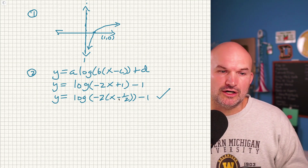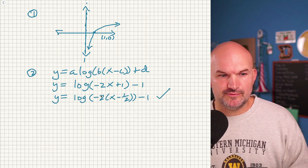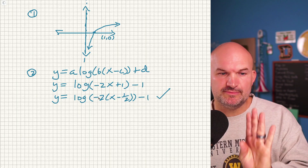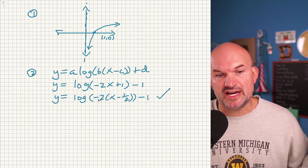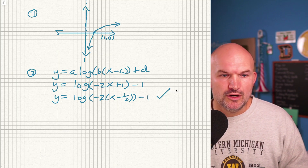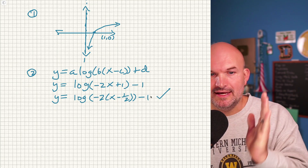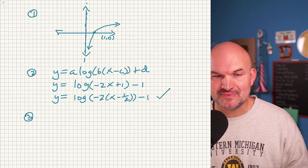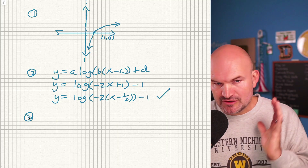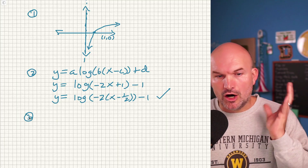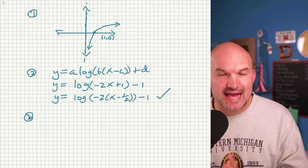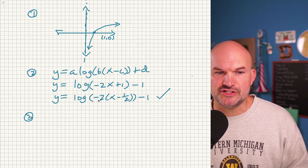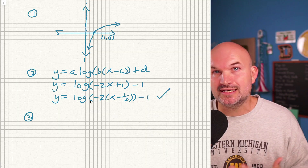Now we can identify the transformations. There's no a, so no vertical stretch or x-axis reflection. We have b = −2, meaning we reflect about the y-axis and apply a horizontal compression by a factor of 2. We shift the graph one-half unit to the right (c = 1/2) and one unit down (d = −1).